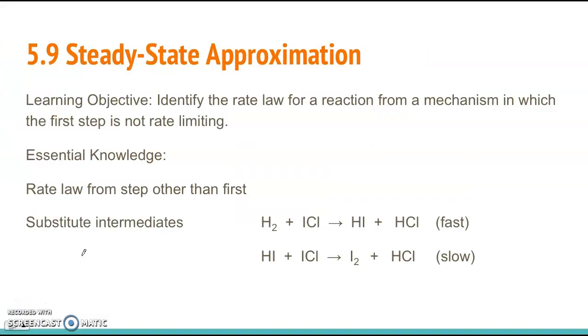Okay, so section 5.9 is on steady state approximation. And what steady state approximation means is it's pretty much the same thing as the last section. You're writing a rate law from the mechanism. The only difference here is now instead of the first step being the slow step, it's going to be the second or third, but it's not going to be the first. So the learning objective is identify the rate law for a reaction from a mechanism in which the first step is not rate limiting.